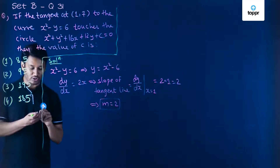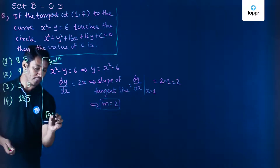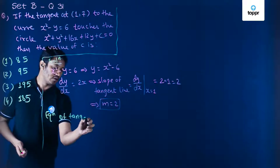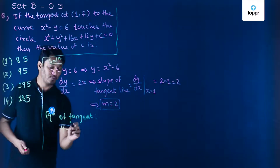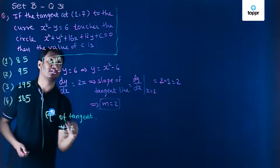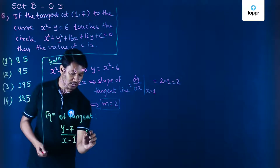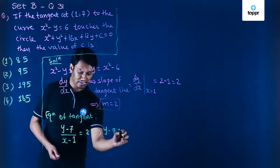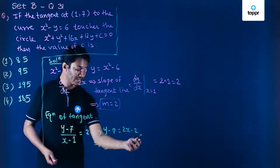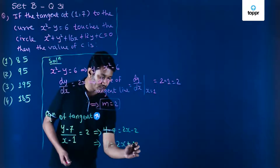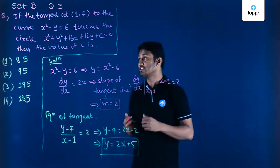Now let us find out the equation of the tangent line. I've got the slope and a point, so the equation of the tangent is: y minus y1 upon x minus x1 equal to slope, giving us y minus 7 equal to 2(x minus 1), which simplifies to y equal to 2x plus 5. This is the equation of the line which is tangent to the given curve.